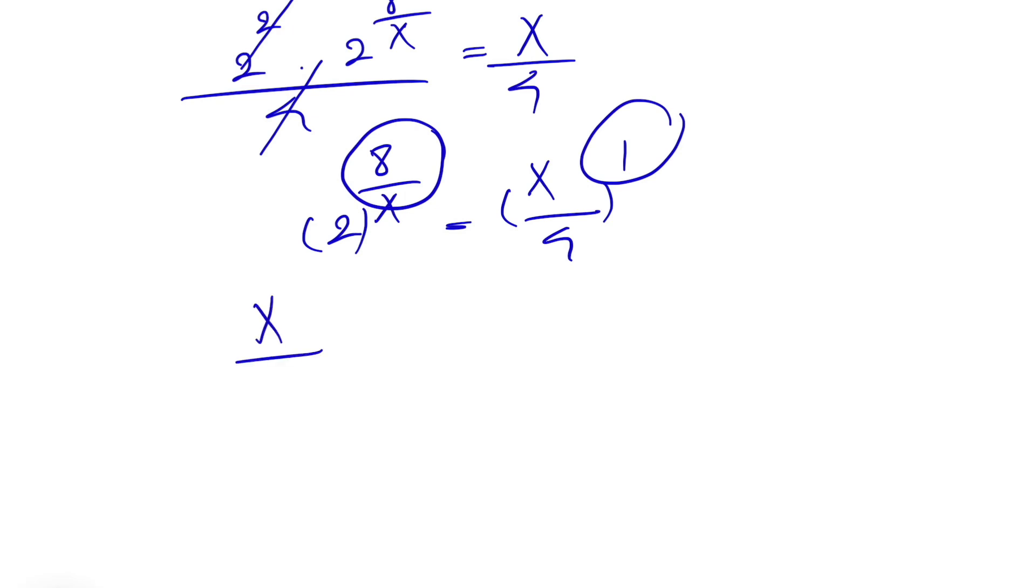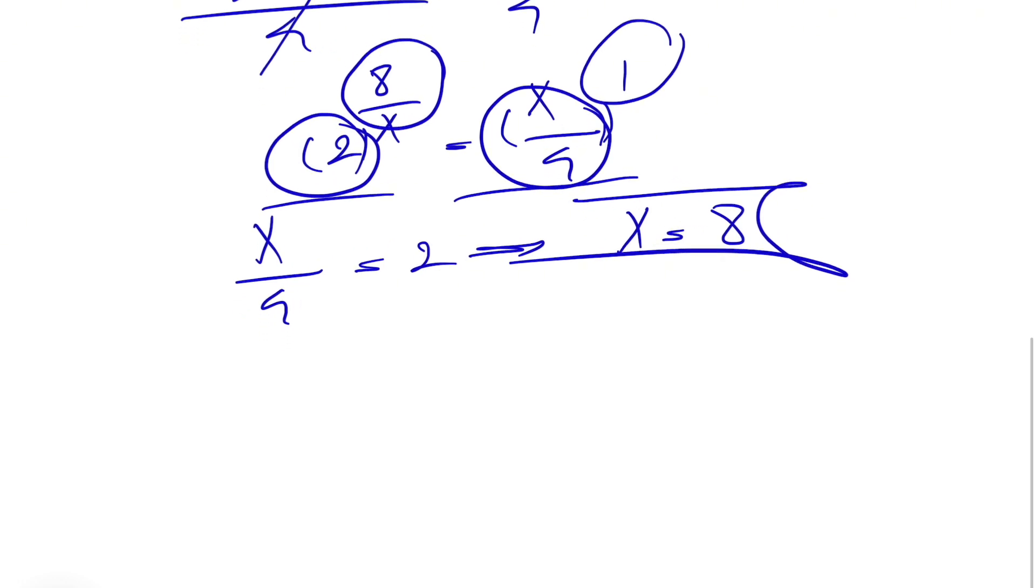Let's say if we have x over 4, which is what we have here, equals 2, our x will be 8. Obviously when it's working for here, it has to work in the exponent too, and what we have on the exponent on the left side is 8 over x.